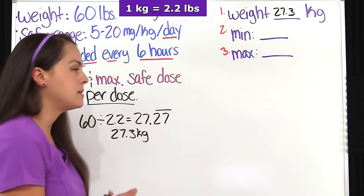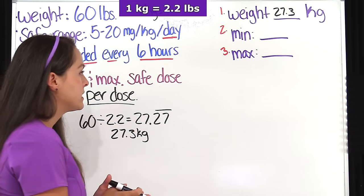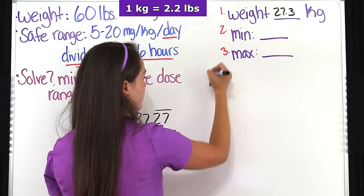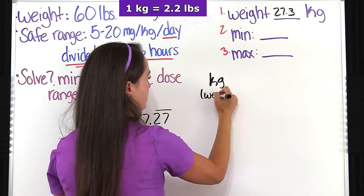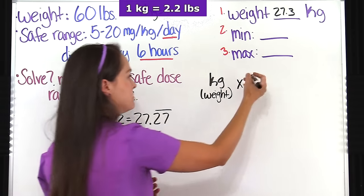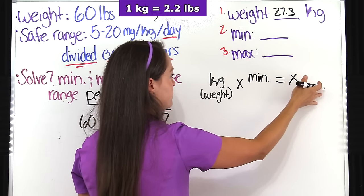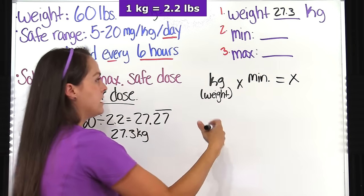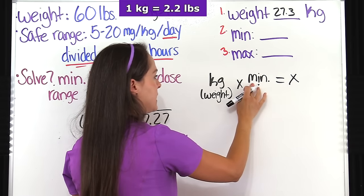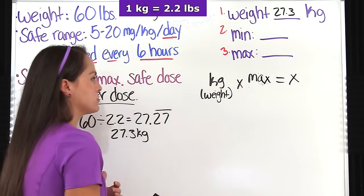Now let's go ahead and solve for the minimum and maximum dose. An easy formula you can use is to take the child's weight in kilograms and multiply that first by the minimum dose — that gives you the dose on the minimum side. Then use the same formula and put in the max dose to get the maximum dose range.